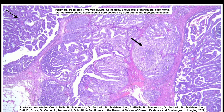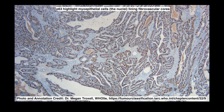This is an example of a peripheral papilloma involving the tubular duct lobular unit. The solid arrow shows foci of intraductal carcinoma, and the dotted arrow shows fibrovascular core covered by both ductal and myoepithelial cells. It fills many lobules within the TDLU. Here's another example of P63 highlighting myoepithelial cells in an intraductal papilloma.